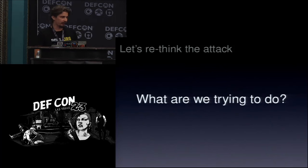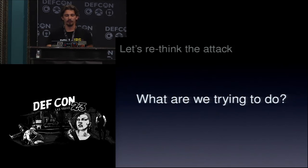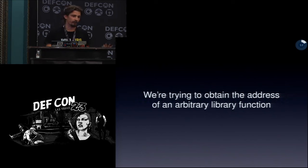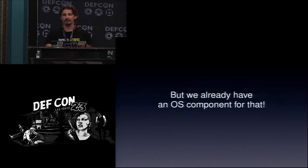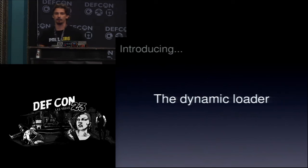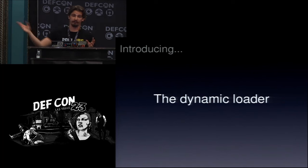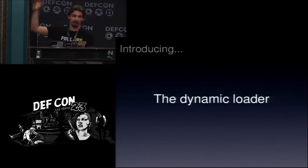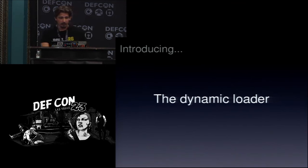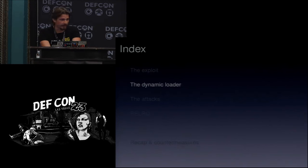So how can we solve this problem? Our idea is to zoom out: what we're trying to do is obtain the address of an arbitrary library function — I have a name and I want its address so I can call it. But there is already a part of the operating system doing this job: the dynamic loader. The dynamic loader's role is to take the main binary, see what imported functions like printf are needed, and from the string 'printf', obtain its address in memory, considering ASLR and everything.